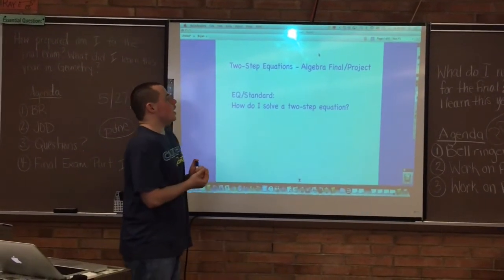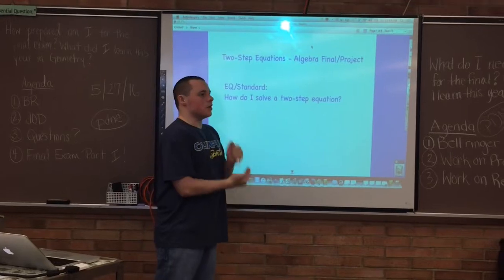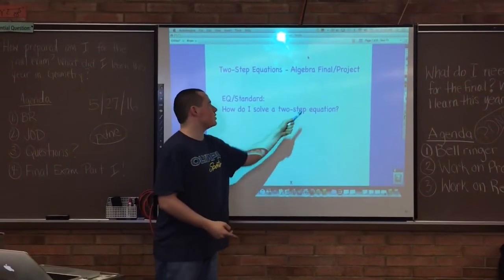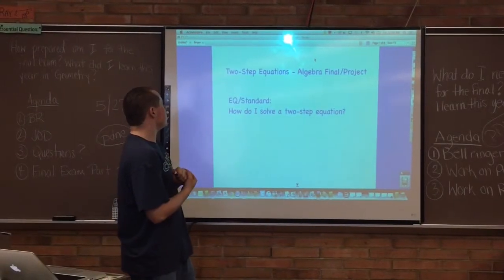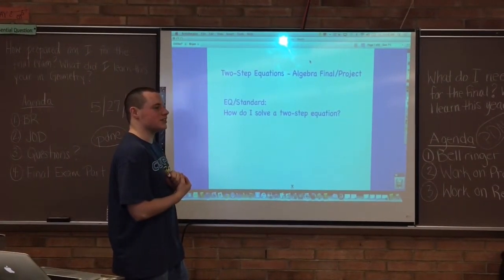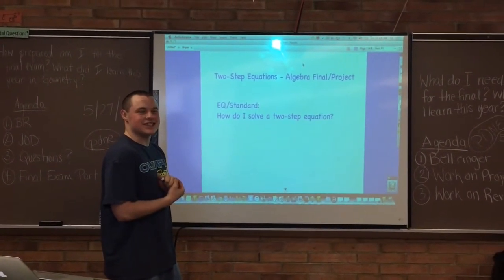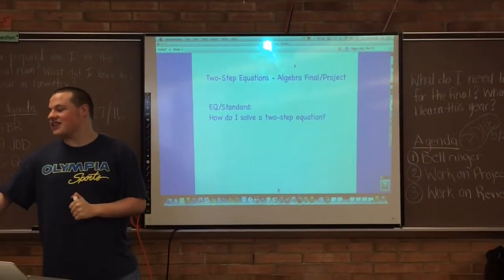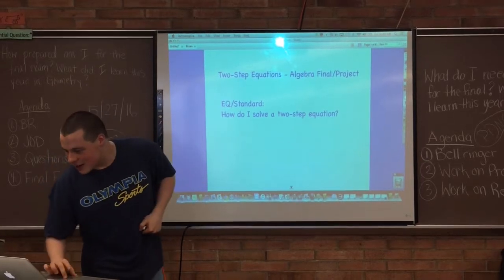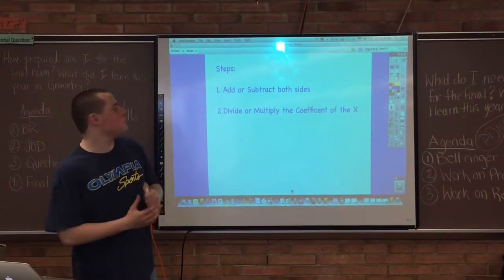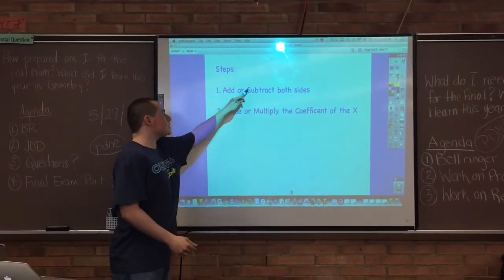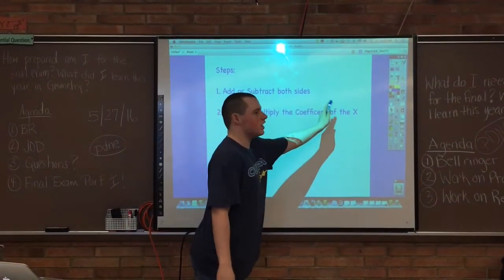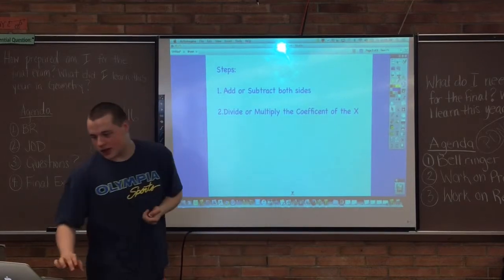So obviously the final is about to be coming soon, so we are going to review two-step equations, and the essential question is how do I solve two-step equations? Uh, I don't know. Can you teach me? Well, that's a really good question. Well, the thing is, basically there are two steps. You have to add or subtract both sides, and divide or multiply the coefficient of the x.